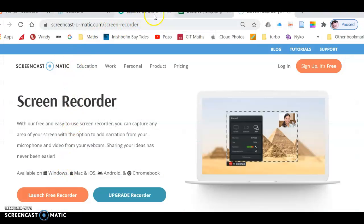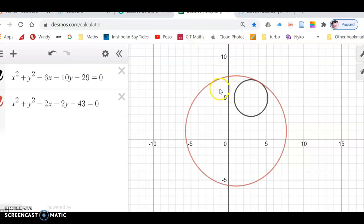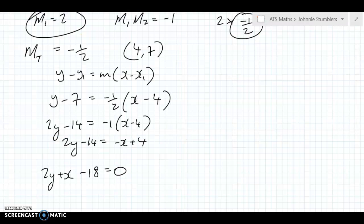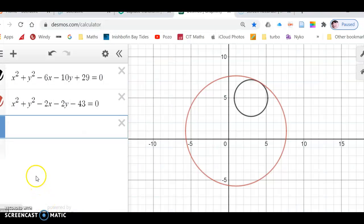And we can check that then. I have these guys drawn out from earlier. And we can stick in our answer there. What did we get? 2y plus x minus 18. 2y plus x minus 18 equals 0. And there you go. That's the common tangent there.